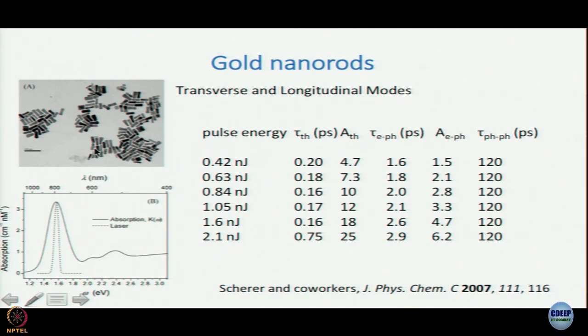What Scherer's group did was not just regular pump-probe spectroscopy, but they used heterodyne detection. We will come back and talk about heterodyne detection when we discuss sum frequency generation later, but when you do heterodyne detection, you can get to know not only about the intensity but also about the field. Intensity is basically the modulus squared of the field, so once you take intensity you lose information about the sign. With heterodyne detection you can get an idea of the field along with its sign.